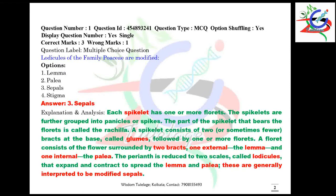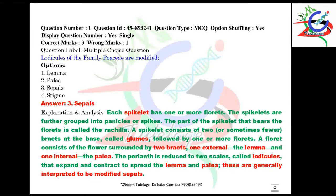The first question: lodicules of the family Poaceae are modified — the options are lemma, palea, sepals, and stigma. Sepals are modified into lodicules in the case of family Poaceae. A complete illustration is given here, along with the different important parts of the spikelet inflorescence, which is the main characteristic feature of family Poaceae.